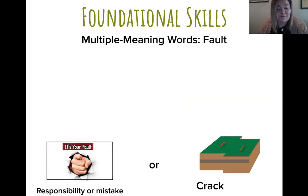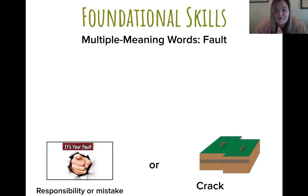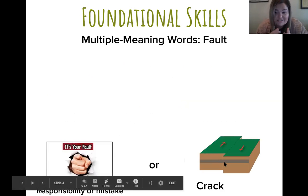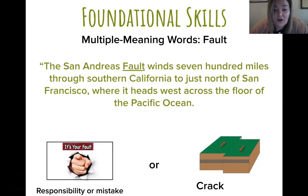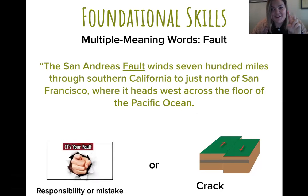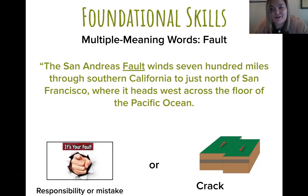Another multi-meaning word we'll come across in the story today is 'fault.' I was the youngest in my family, so I was always blaming my brother — saying it is your fault! But the way we're learning it today: a fault in the ground is actually a crack in the earth. So let's look — which meaning is it in the story? 'The San Andreas Fault winds 700 miles through Southern California.' Yep — it's two. It is the San Andreas Fault — a crack. So good job, fourth graders!